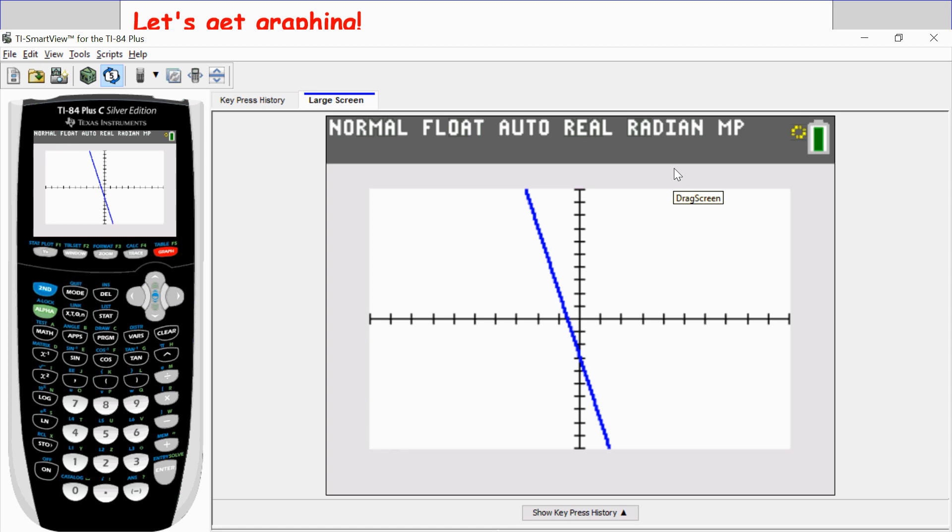Okay, so on this graph, we want to know when x is equal to 1, what is y? So I go into my trace menu, and I enter in 1. So see here, it says x equals 1. I press enter, and the calculator tells me the y value that goes with that is negative 8.